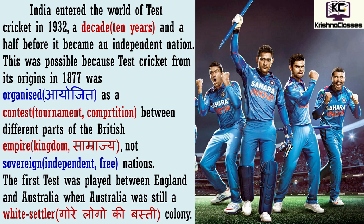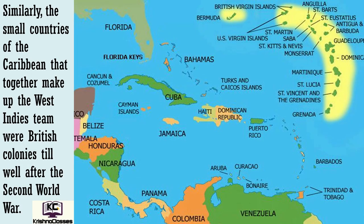The first test was played between England and Australia, when Australia was still a white settler colony. Similarly, the small countries of the Caribbean that together make up the West Indies team were British colonies till well after the Second World War. Is map mein hum woh Caribbean countries dekh sakte hain jo milkar ek team ke taur par world cricket mein khelti hain, aur us team ko West Indies team ke naam se hum sab jaante hain.